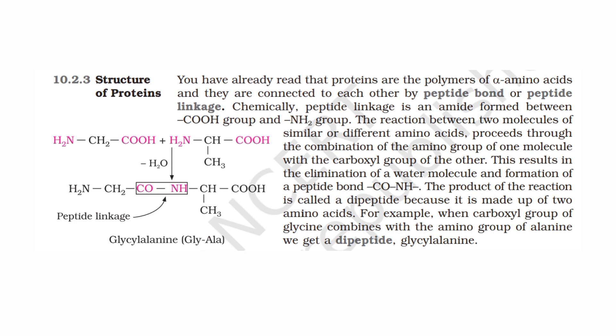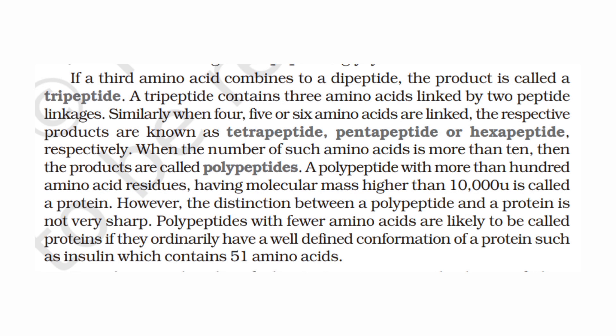The structure of proteins involves alpha amino acids linked by peptide bonds (peptide linkage). When two amino acids join, they form a dipeptide — for example, glycyl-alanine. Three amino acids form a tripeptide, followed by tetrapeptide, pentapeptide, and hexapeptide. When more than 10 amino acids are joined, it is called a decapeptide, and longer chains are polypeptides.